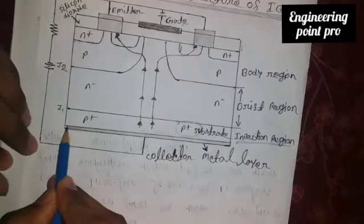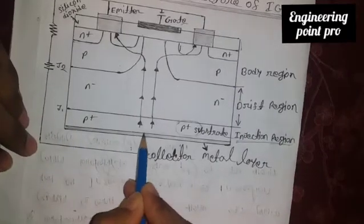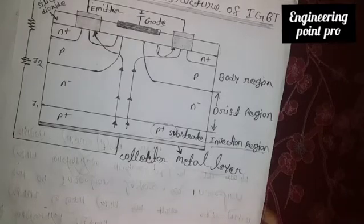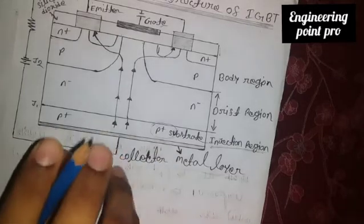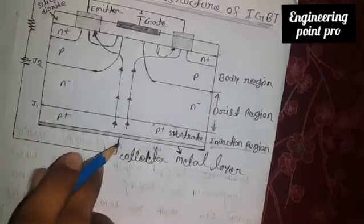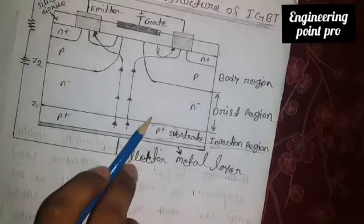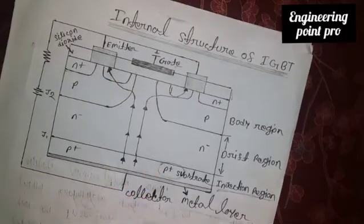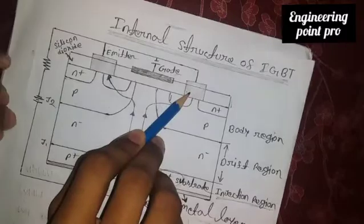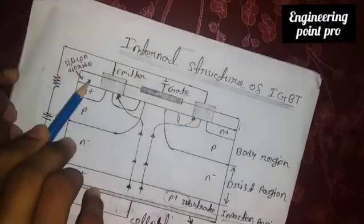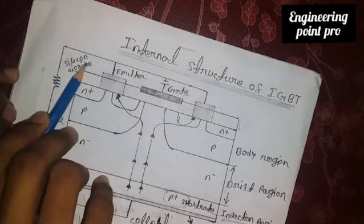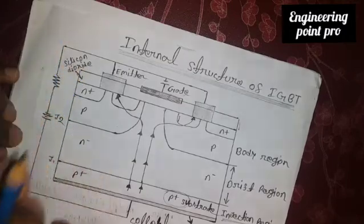Let's look at this layer. This layer is a metal layer. This is the semiconductor. This is the metal layer. This is the blank layer. This is the silicon dioxide. This is the insulator.